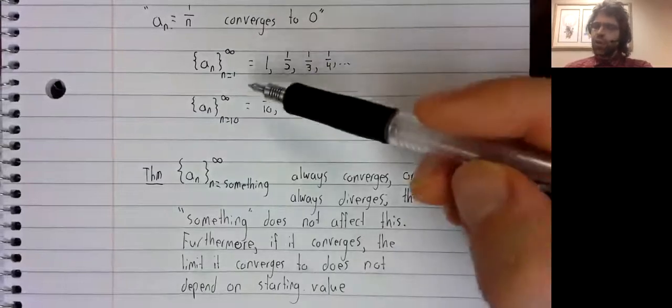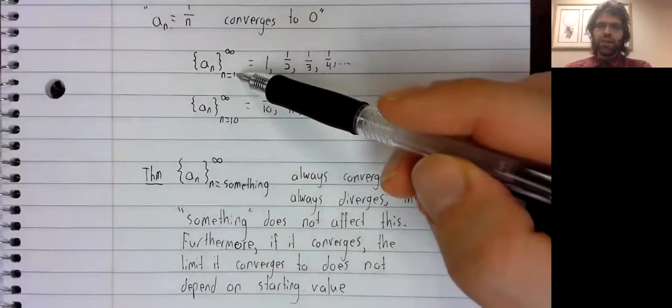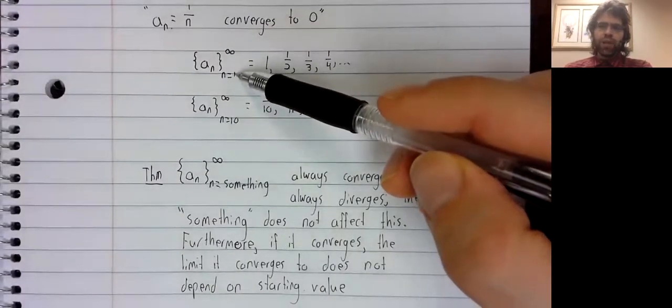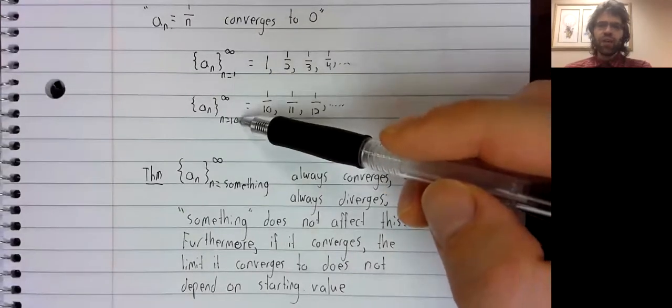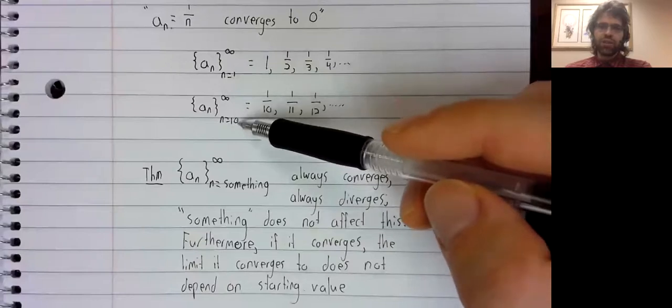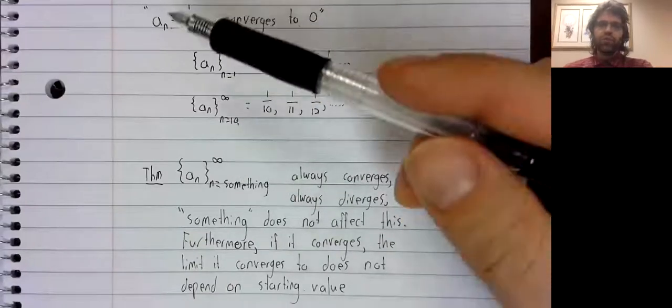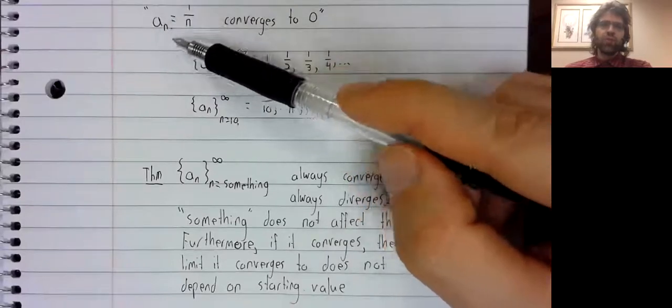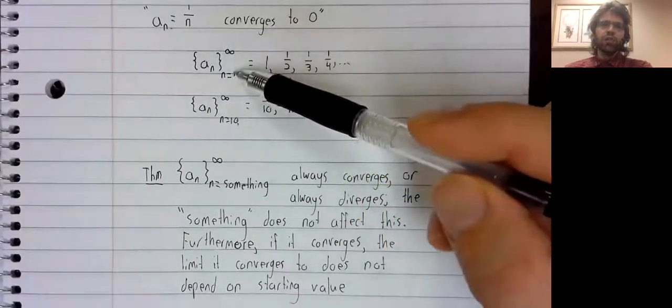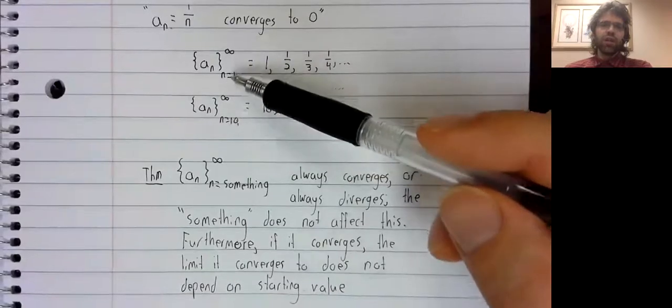That is to say, there is no possibility that one will give us convergence and another will give us divergence. Convergence or divergence only depends on this formula, not on this starting value.